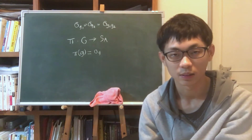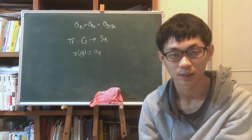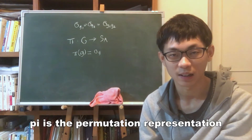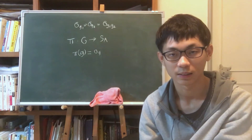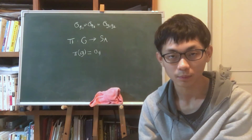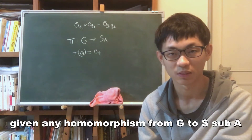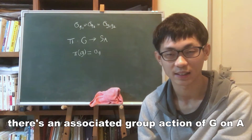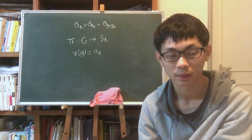π is called a permutation representation of G, and we say that π is the permutation representation afforded by the action of G on A. Conversely, given any homomorphism from G to S_A, there is an associated group action of G on A.